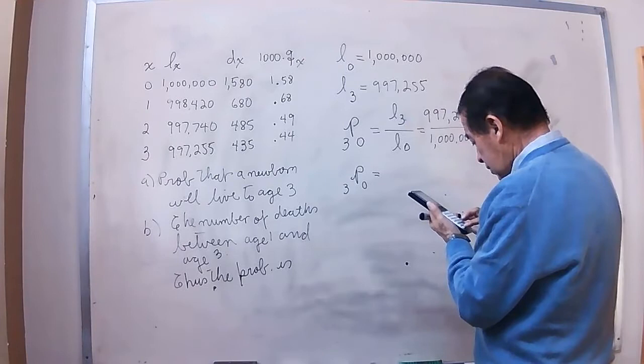So replacing the numbers, we'll have 997,255 divided by a million.